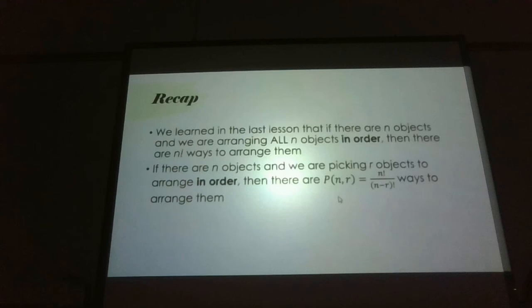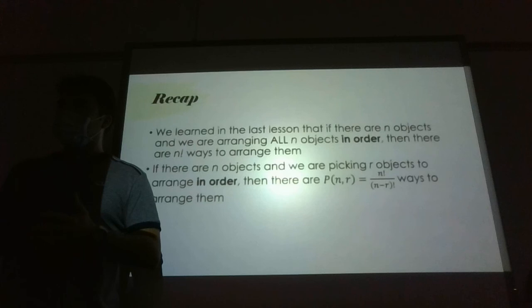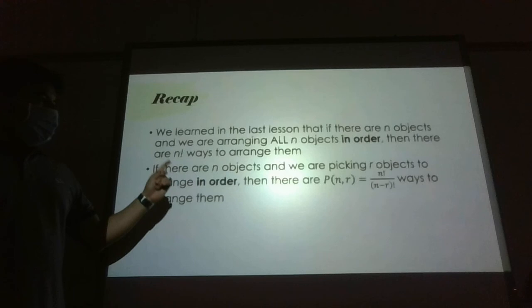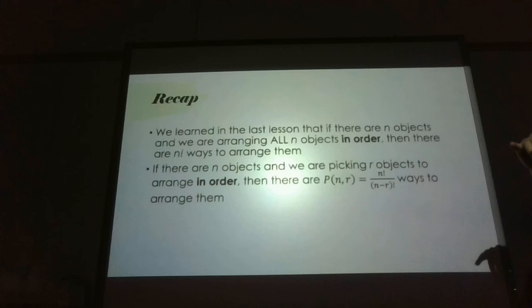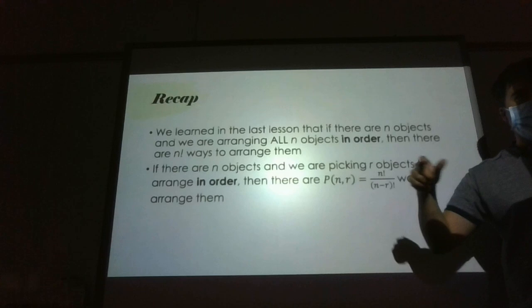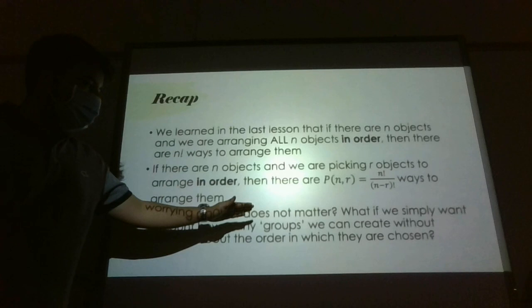Quick recap from yesterday: if you are arranging n objects, say five people in order, there are 5! ways of doing that. If you have ten people, there are 10! ways. And if you have n objects and want to arrange only some of them in order, you use the permutation formula — total objects divided by the factorial of the difference between total and selected objects.